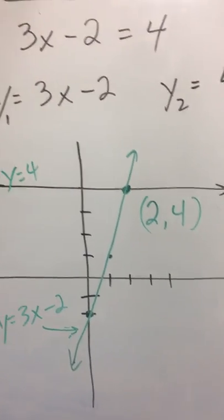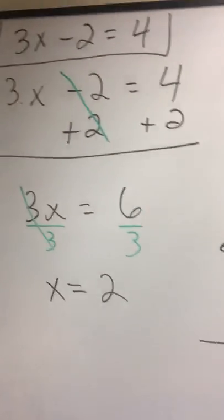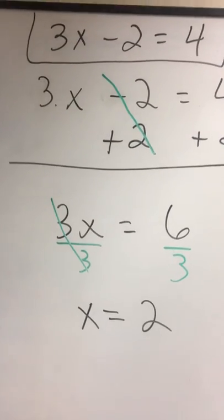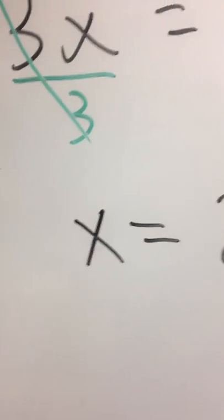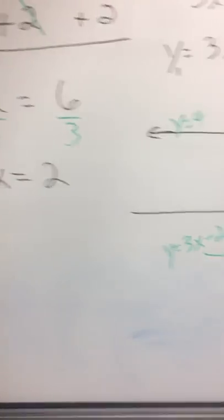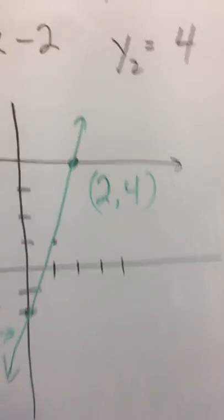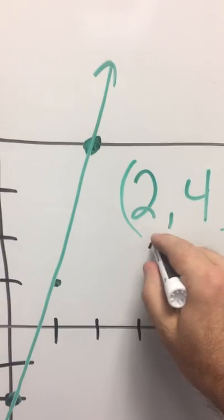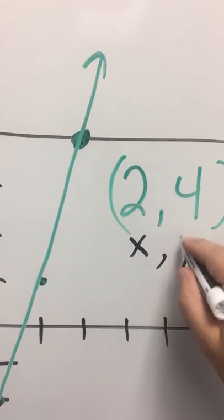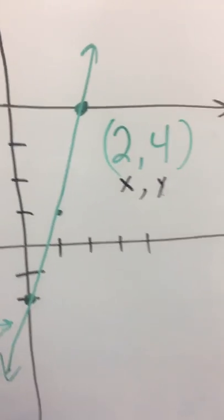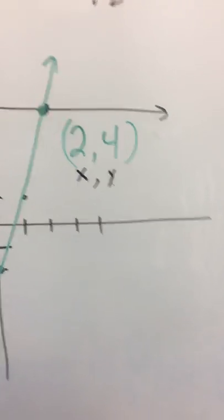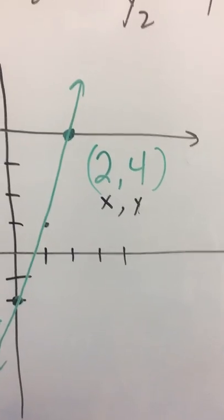Now I'm going to flip back over to our other answer, and notice x = 2. We're very happy. If you take a look at our point, keep in mind that points are always in (x, y) format. So if it's in (x, y) format, what's in the x position? 2.